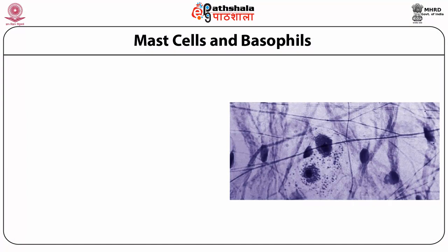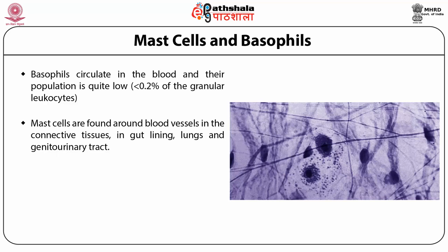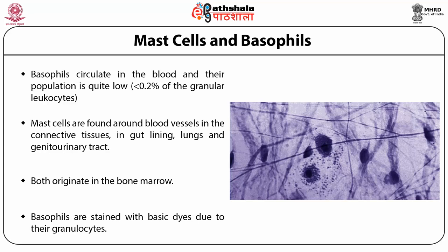Basophils and mast cells have both similar structure and function. Basophils circulate in the blood and their population is quite low — less than 0.2 percent of the granular leukocytes. Mast cells are found around blood vessels in the connective tissues, gut lining, lungs, and genitourinary tract, making them more or less ubiquitous in the body. Both basophils and mast cells originate in the bone marrow, and basophils are stained with basic dyes due to their granules.